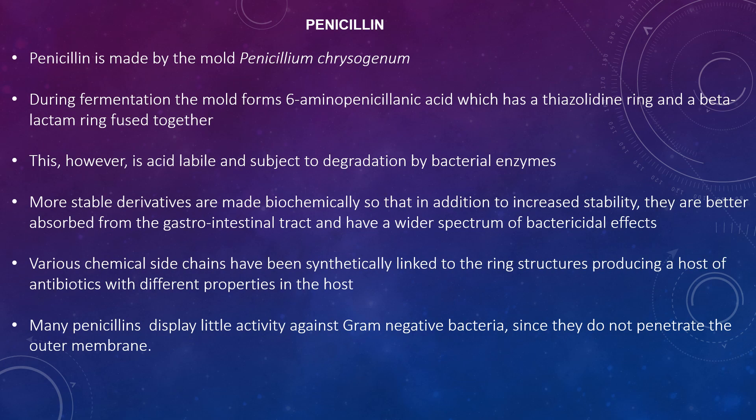Penicillin is made by the mold Penicillium chrysogenum during fermentation. The mold forms 6-aminopenicillanic acid, which has a thiazolidine ring and a beta-lactam ring fused together; however, this is acid labile and subject to destruction by bacterial enzymes. More stable derivatives are made biochemically, providing increased stability, better absorption from the gastrointestinal tract, and a wider spectrum of bacterial effects. Various chemical side chains have been synthetically linked to the ring structures, producing antibiotics with different properties.